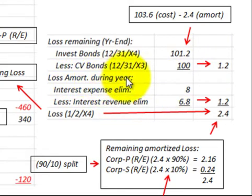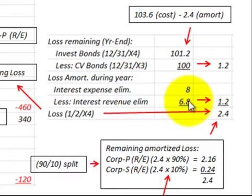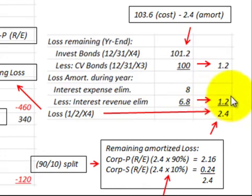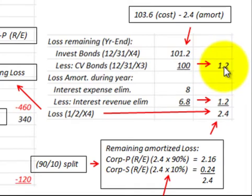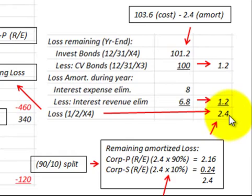Looking at the amortization loss on interest for the year: we have interest expense of $8,000 less interest revenue adjusted for bond amortization of $6,800, giving us a loss for the amortization during the year of $1,200. So our total loss remaining at the beginning of year X4 is $1,200 remaining on the bond plus $1,200 amortization loss, giving a total loss of $2,400.